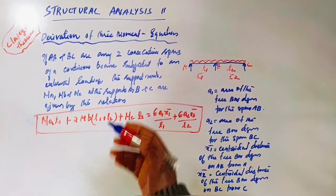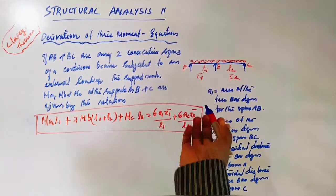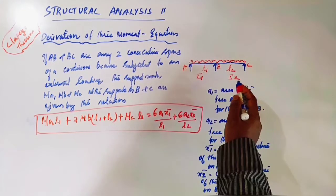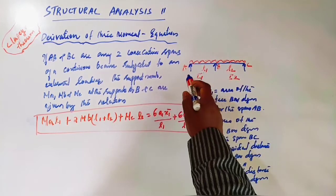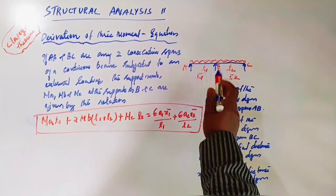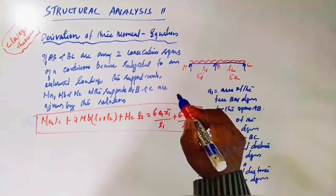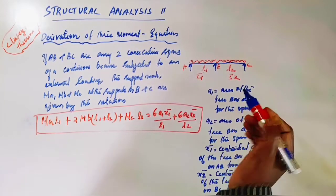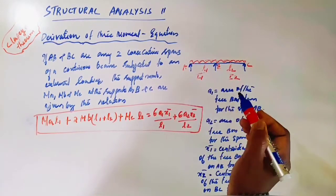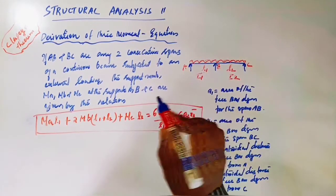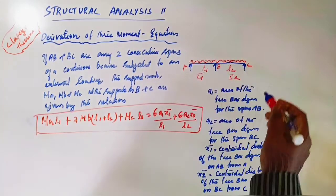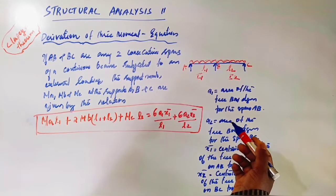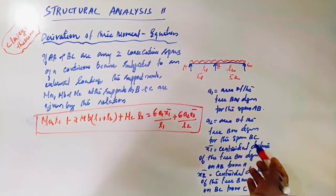The derivation is done. The three-moment equation is the relation we apply to analyze a continuous beam with consecutive spans AB and BC. AB span is L1, BC span is L2. I1 and I2 are the moments of inertia of spans AB and BC. The beam is externally loaded. A1 is the area of the free bending moment diagram for span AB.